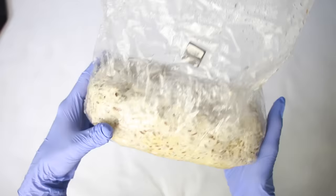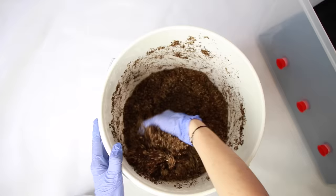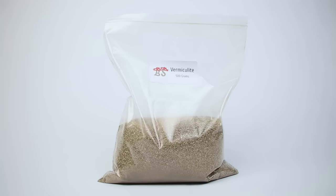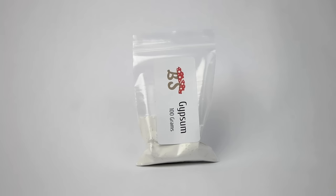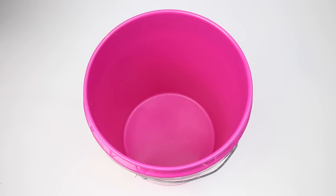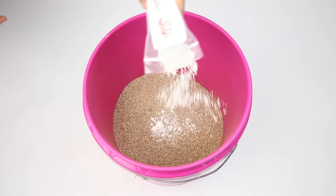After your bag is fully colonized, it's time to make the bulk substrate. I like to make my bulk substrate the day before I'm going to use it. To make bulk substrate, you will need 500 grams of vermiculite, 500 grams of cocoa coir, and 100 grams of gypsum.